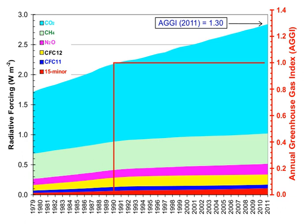Ice cores provide evidence for greenhouse gas concentration variations over the past 800,000 years. Both CO2 and CH4 vary between glacial and interglacial phases, and concentrations of these gases correlate strongly with temperature. Ice core records indicate CO2 mole fractions stayed within a range of 180 ppm to 280 ppm throughout the last 800,000 years, until the increase of the last 250 years.